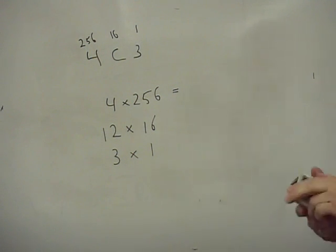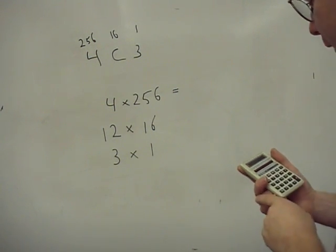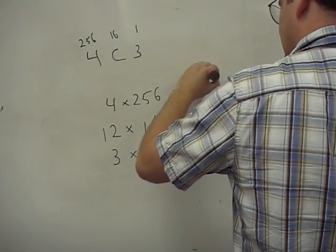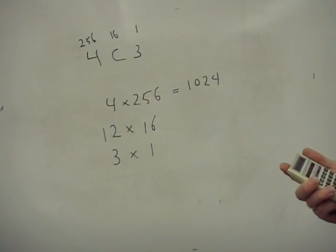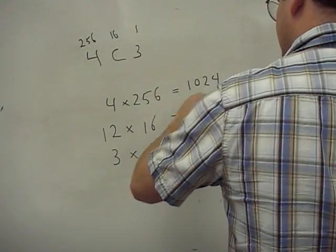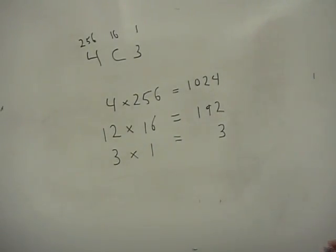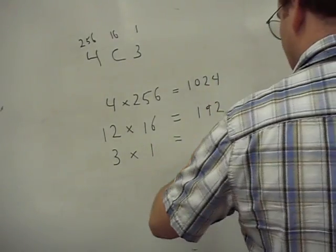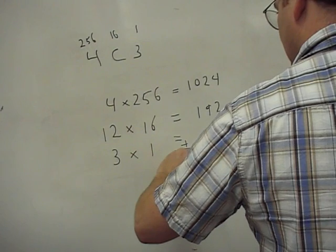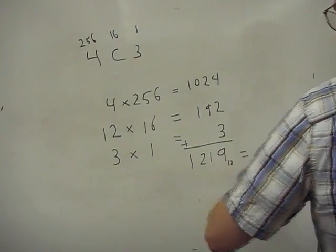4 times 256 is 1024. 12 times 16 is 192. And 3 times 1 is 3.